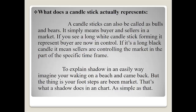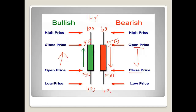If you see a long white candlestick forming, it represents buyers are now in control of the market. If the closing price is higher than the opening price it represents buyers, and if the closing price is lesser than the open price it represents sellers. There is also something called a shadow — the line above or below the candle body is called a shadow. The green or red part is the candle body, and the extending line is the shadow.